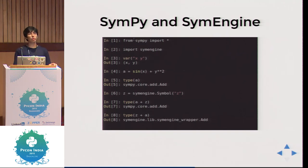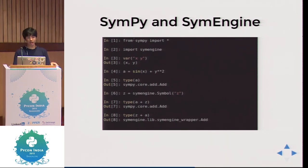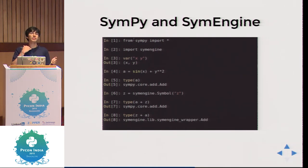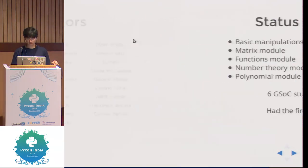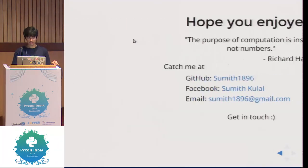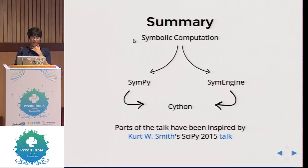You can already use SymEngine for SymPy. If you import SymPy and import SymEngine and use a SymEngine symbol instead of a SymPy symbol, you are much faster. You can already do that. Courtesy goes to Kurt Smith for the Cython example I took from a SciPy 2015 talk. Hope you enjoyed. You can find me on GitHub, Facebook, and email. As part of the SymPy team I would like to thank Vijay and all the organizers for having us here.